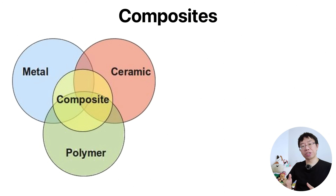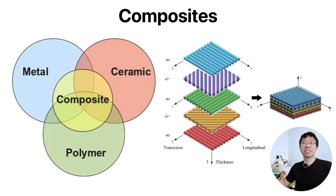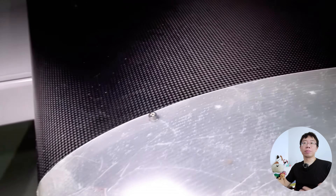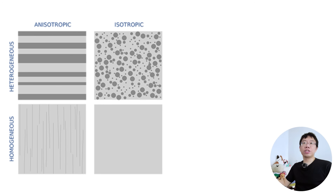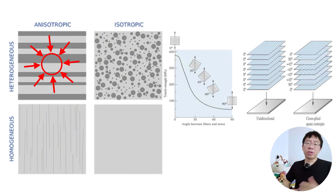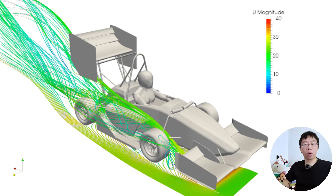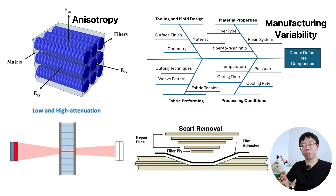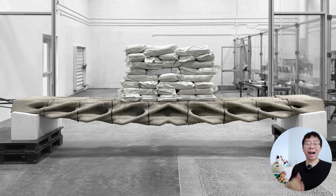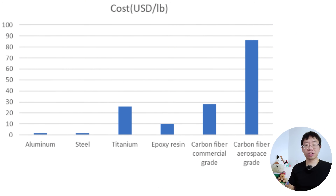Composites are the strategic combination of the previous three families. By embedding high-stiffness fibers like carbon or glass into a ductile polymer matrix, we create anisotropic materials that deliver high stiffness and strength along specific load paths at extremely low weight. Anisotropy means the material's physical properties vary depending on the direction in which they are measured. We use these when we need to tailor material strength to specific load paths, such as in wind turbine blades or Formula One monocoques. Composites demand careful consideration of anisotropy, manufacturing variability, inspection difficulty, and repairability. They excel in aerospace, motorsports, and high-performance structures, but are rarely chosen purely for cost or simplicity.